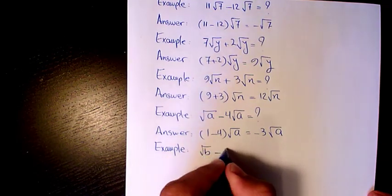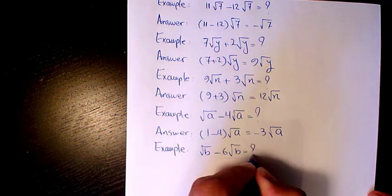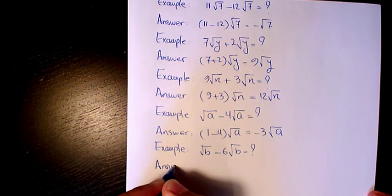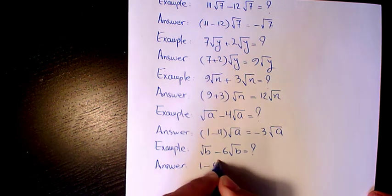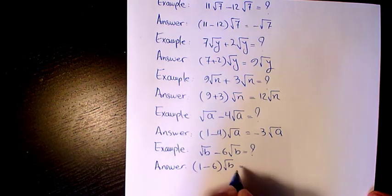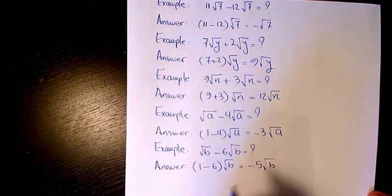Root b minus 6 root b. Answer is 1 minus 6 root b, negative 5 root b.